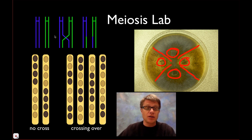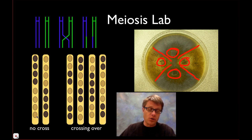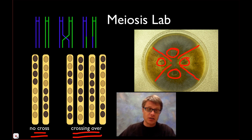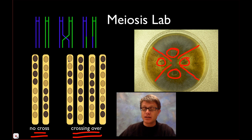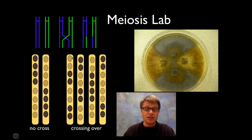If there's no crossover, the spores are going to align in a 4-to-4 pattern — that means no crossover existed. But if crossing over occurs, you'll get a 2-2-2-2 pattern, or a 2-4-2 pattern. So if you see ascospores arranged like that, crossing over has occurred. The cool thing about this lab is that you can figure out the frequency of crossover.